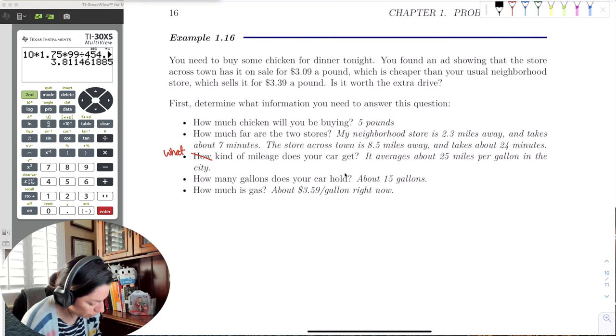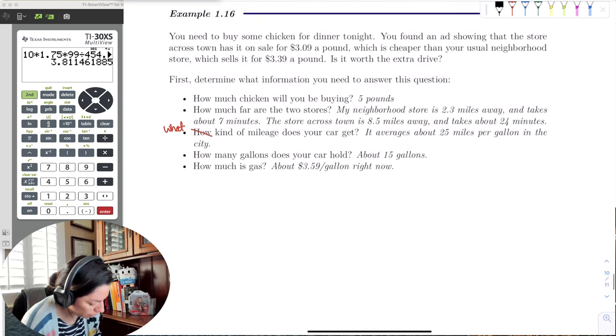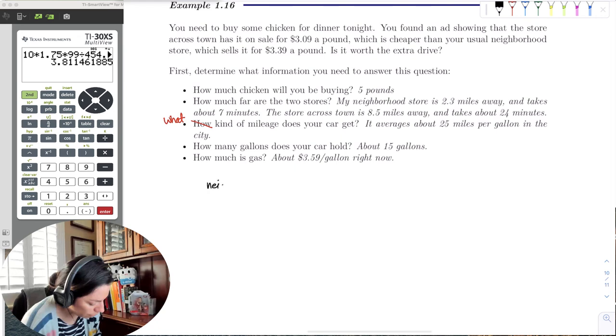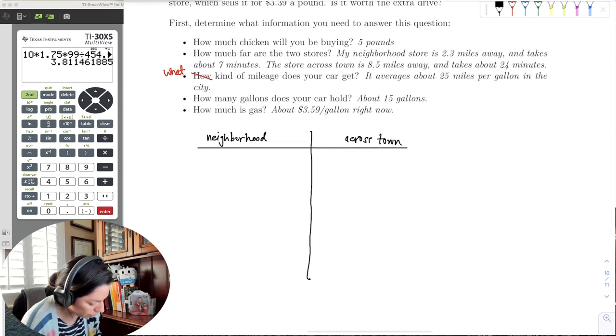It doesn't mean you're going to use every single piece of this. You're just going to see if it's worth the extra drive. Some people's time is more valuable than 30 cents a pound. Some people, time is no object, but money is the object. So saving the money is more important. It's really about perspective. So let's get a few perspectives from all this. I think the first thing is we want to see how much we're going to pay for the chicken. Let's do the neighborhood store and then the cross town store.